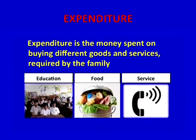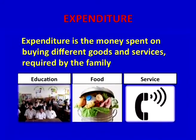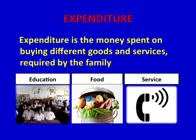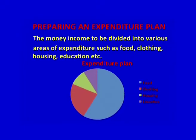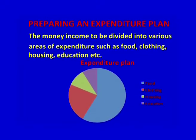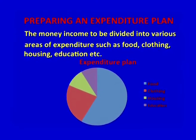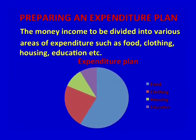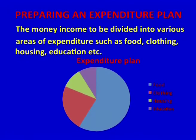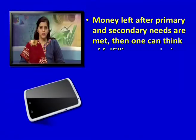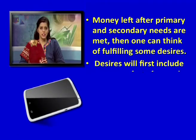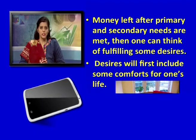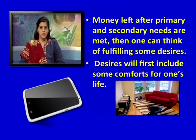Expenditure is the money spent on buying different goods and services required by the family. Preparing an expenditure plan: the money income is to be divided into various areas of expenditure such as food, clothing, housing, education, etc. Money left after primary and secondary needs are met can then be used to fulfill some desires.